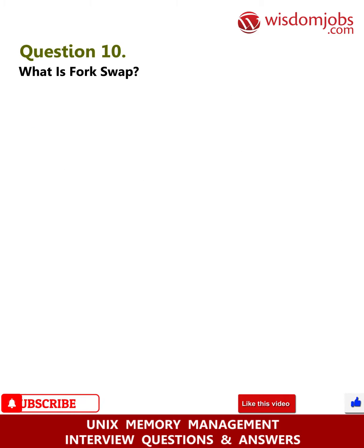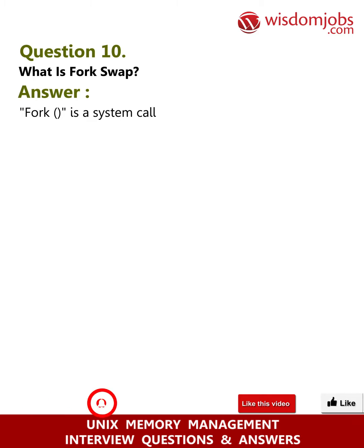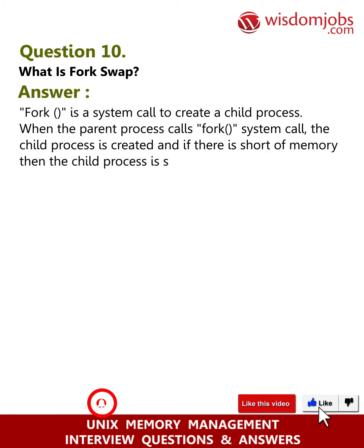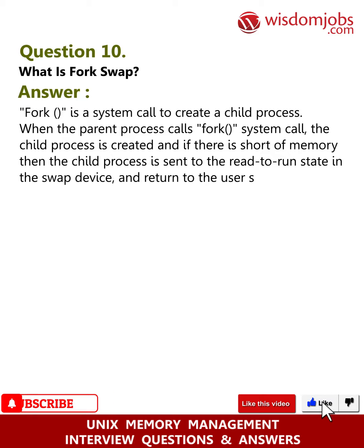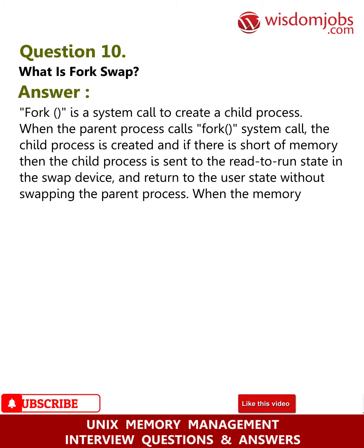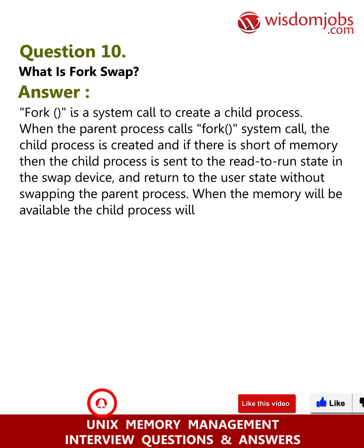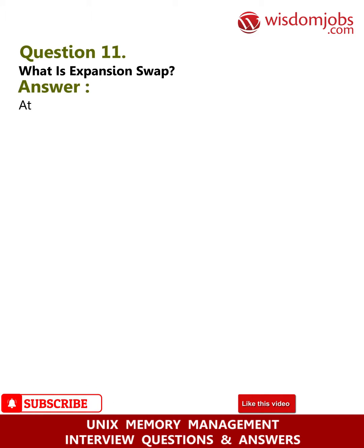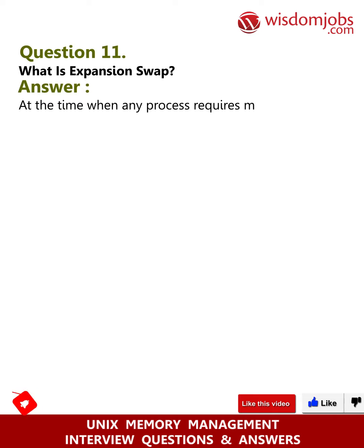Question 10: What is fork swap? Answer: Fork is a system call used to create a child process. When the parent process calls the fork system call, the child process is created. If there is a shortage of memory, the child process is sent to the ready-to-run state in the swap device, and control returns to the user state without swapping the parent process. When memory becomes available, the child process is swapped into main memory.